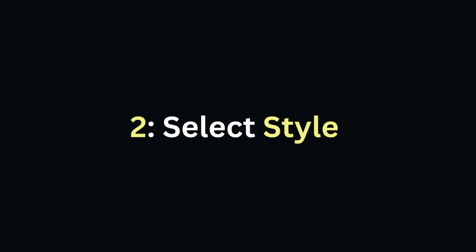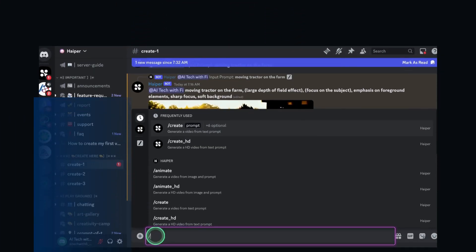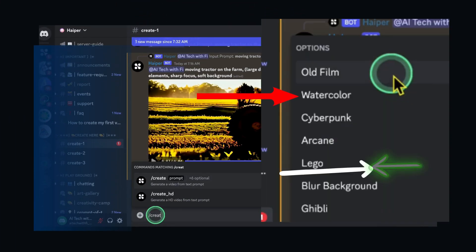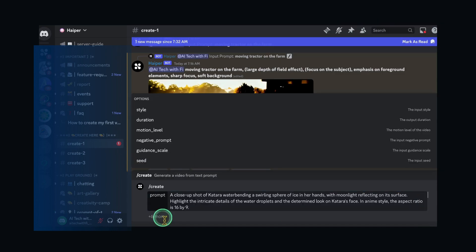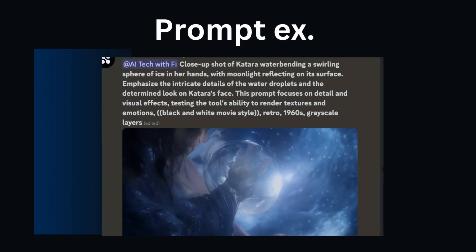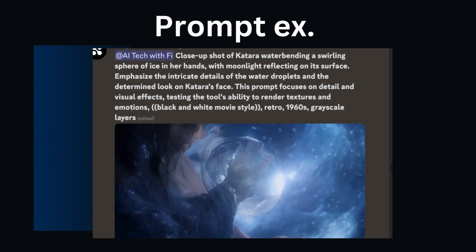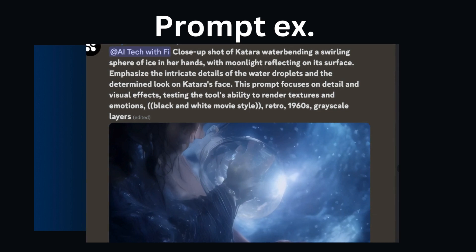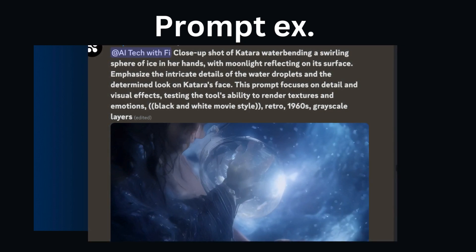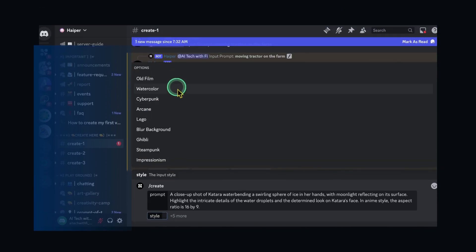Step 2: Select video style. HyperAI provides various styles to choose from — you can choose watercolor, arcane, lego, and many more. Select a style that aligns with your vision. In this prompt example, I requested HyperAI to generate a 4-second video clip: a close-up shot of Katara waterbending a swirling sphere of ice in her hands, with moonlight reflecting on its surface. Highlight the intricate details of the water droplets and the determined look on Katara's face, in anime style, aspect ratio 16 by 9.